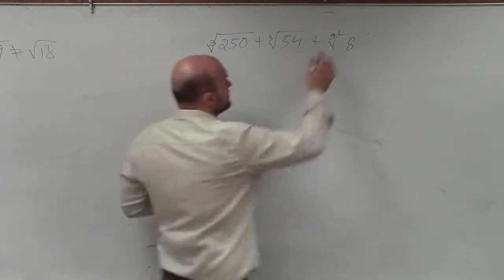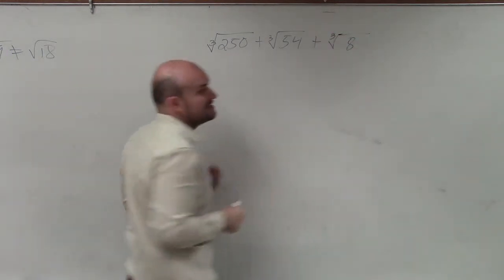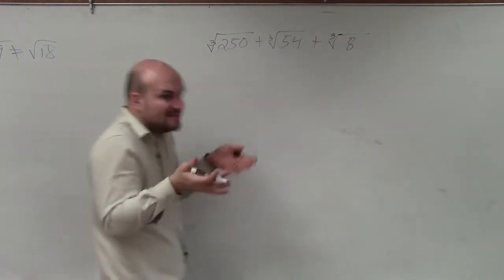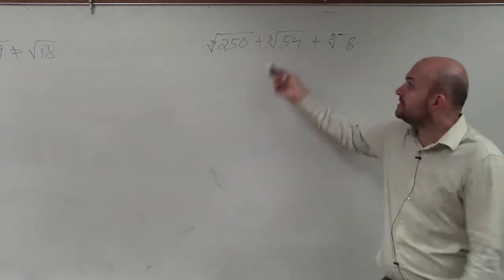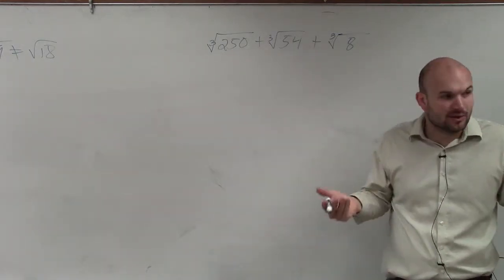When looking at this example, ladies and gentlemen, the main important thing is we can only combine them when they have exactly the same radicand. You can see here I have 250, 54, and 8, right? So that's not going to work.